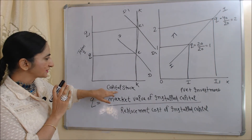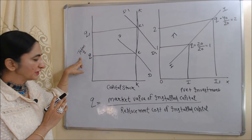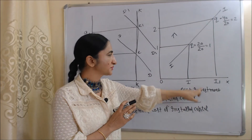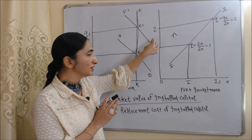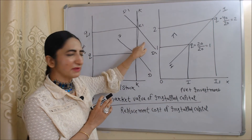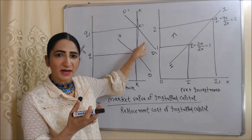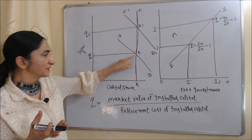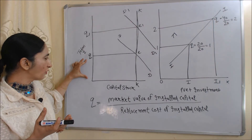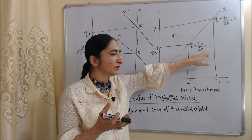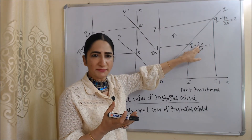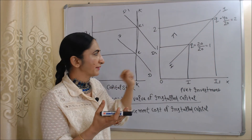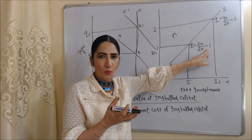In the first diagram, the X-axis has capital stock and the Y-axis has Tobin Q. In the second diagram, the X-axis has net investment and the Y-axis has the value of Tobin Q. DD is the demand curve representing the demand for firm shares. Initially, the equilibrium point is E, where the value of Tobin Q is OQ — equal to 1. Here, the market value of installed capital is 20 and replacement cost is also 20, so 20 divided by 20 equals 1.